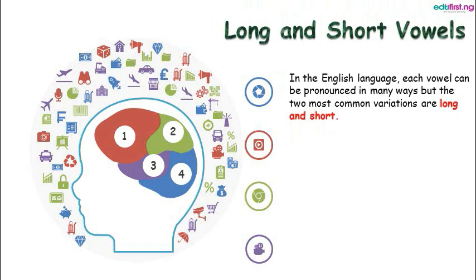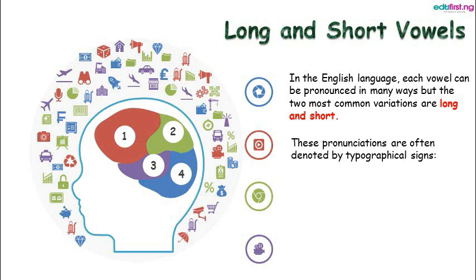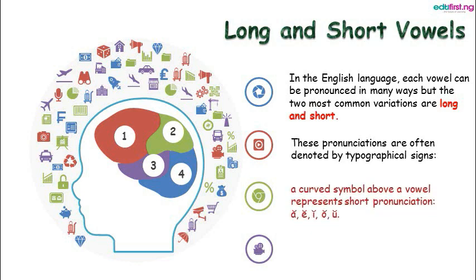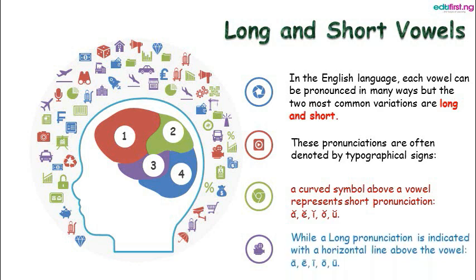In the English language, each vowel can be pronounced in many ways, but the two most common variations are the long and the short. These pronunciations are often denoted by typographical signs. You usually have a curve symbol above the vowel which represents the short pronunciation, and in some cases you could have a colon by the side of the letter to mean long pronunciation.